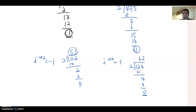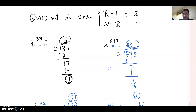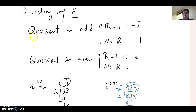It's up to you which method you choose. If you divide by four, find the remainder: remainder 1 → i; remainder 2 → negative 1; remainder 3 → negative i; no remainder → 1. If you divide by two, look at the quotient first: odd quotient with remainder 1 → negative i; odd quotient with no remainder → negative 1; even quotient with remainder 1 → i; even quotient with no remainder → 1.